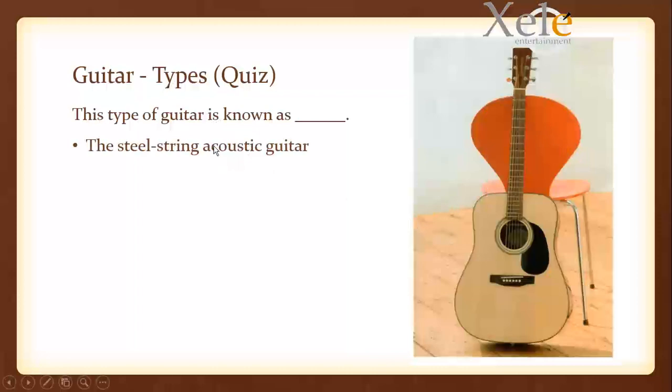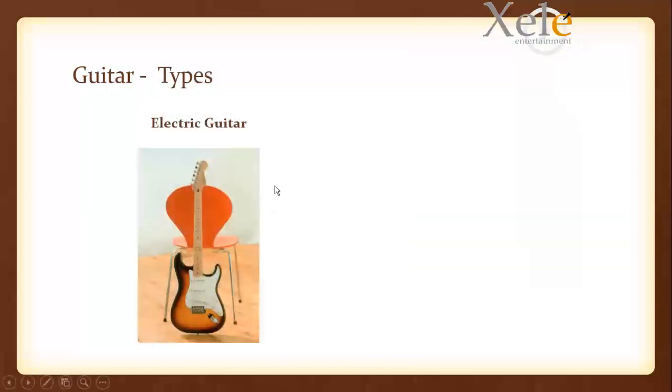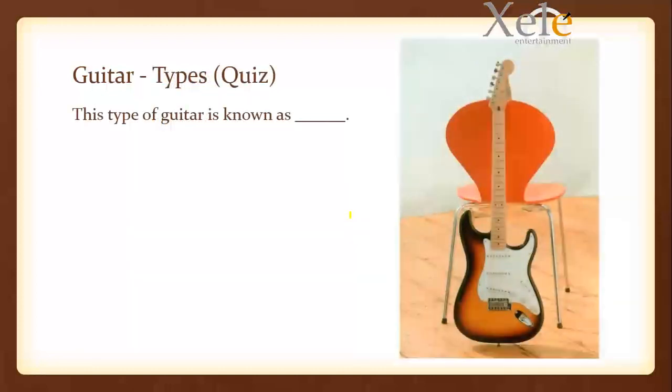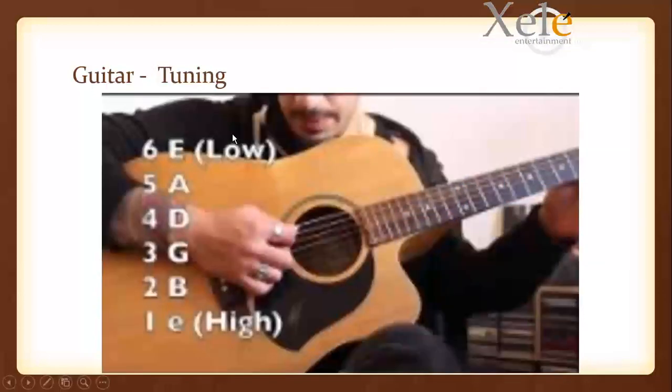And this type of guitar right here is known as the steel string guitar. The third type of guitar we have is the electric guitar. Almost everyone has come across an electric guitar—you see rock stars rocking on this one. So that's the electric guitar right there.